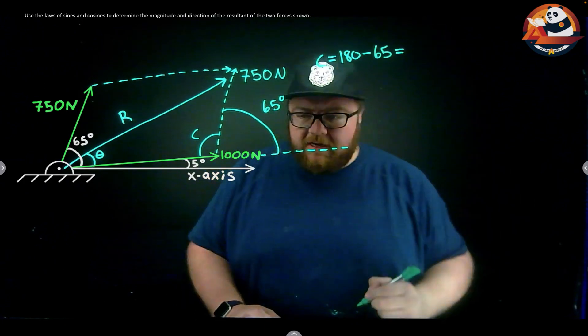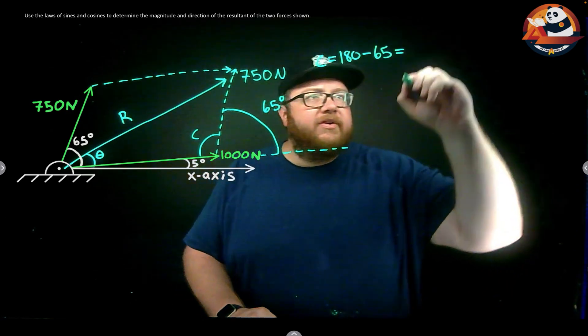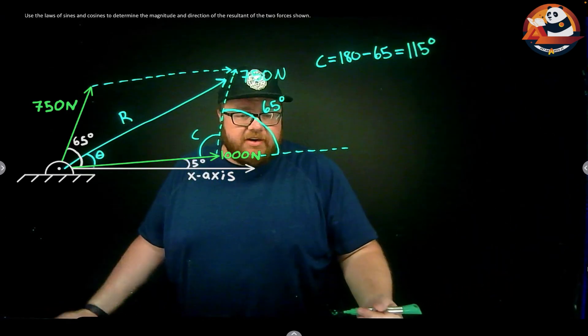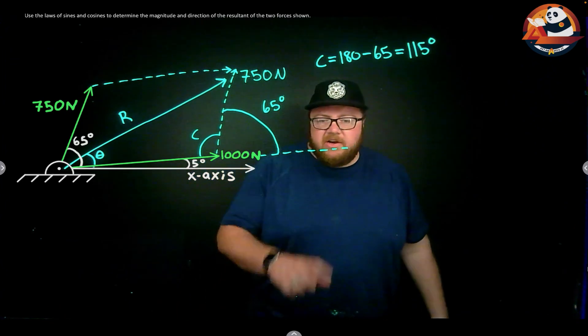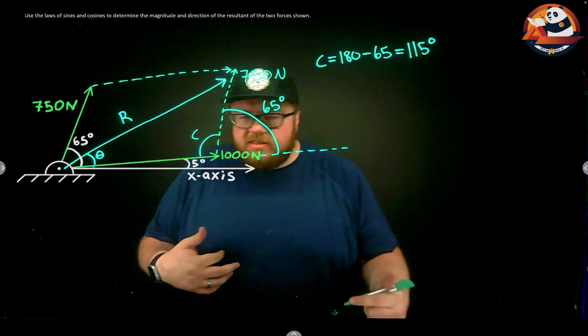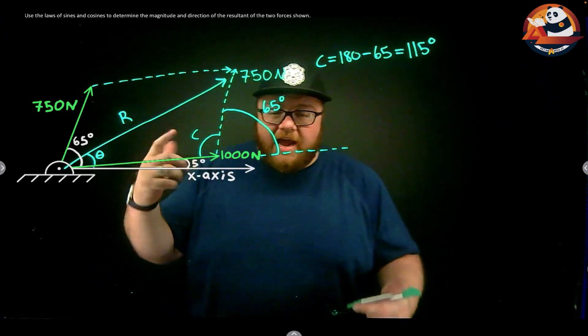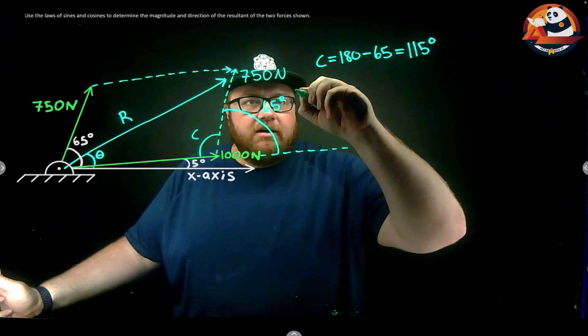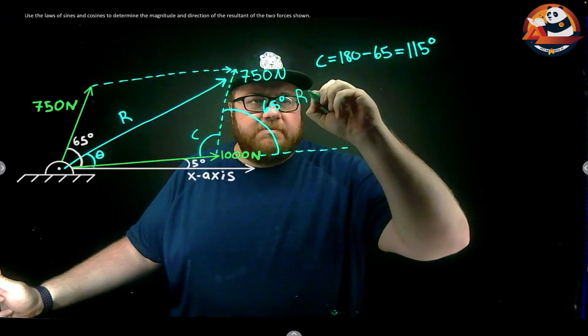So I can write this as C is 180 (the full angle) minus 65, and that's going to get me a 115 degree angle. I have C figured out. Then if I know C, I can come in and use the law of cosines to figure out what is the resultant's magnitude, which would be half of my answer.